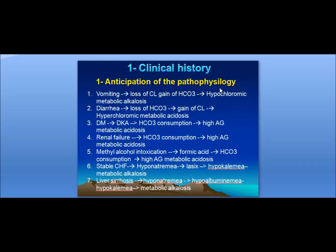Anticipation of the pathophysiology — like what? If the patient is vomiting, they are going to lose chloride and gain bicarbonate, to develop hypochloremic metabolic alkalosis. If the patient develops diarrhea, they will lose bicarbonate and gain chloride, to develop hyperchloremic metabolic acidosis.